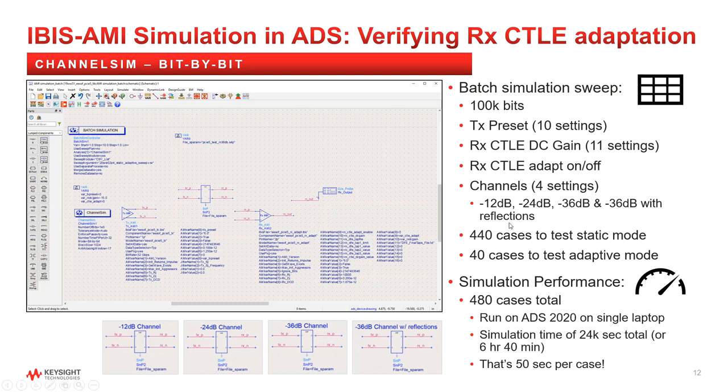For static mode testing, we're looking at 10 transmit presets swept across 11 CTLE DC gain settings across 4 channels, which results in 440 cases total.